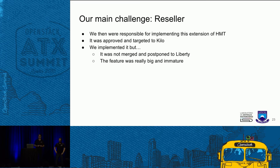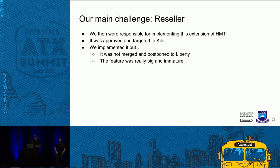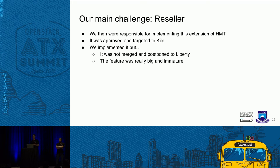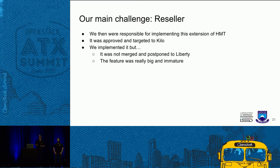The next step for Hierarchical Multi-tenancy was implementing Reseller — an extension of this first feature. This feature was approved and targeted to Kilo, and we implemented it in Kilo too. But it was not merged. The main problem was that we didn't make a good discussion in the spec process. The feature was really big and immature. When we were doing the implementation, we found a lot of bugs that we didn't discuss in the spec process. You need to be aware that the spec process, the documentation, and the design are really important in OpenStack.